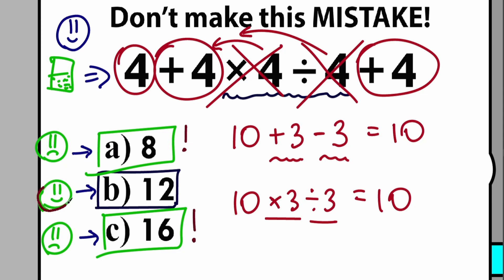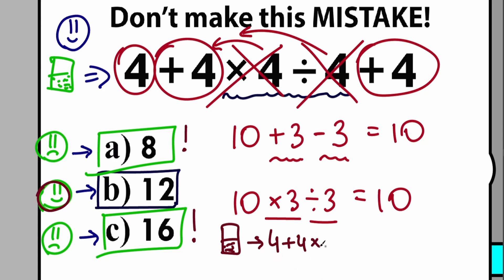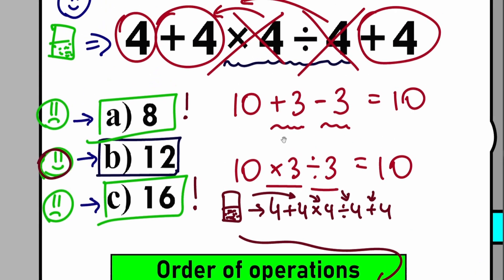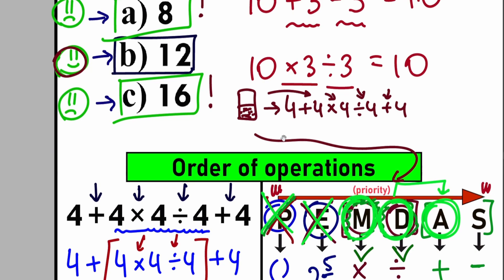You can be proud of yourself when you choose 12. When checking on your calculator, plug in the whole problem from left to right — don't stop partway and add 4+4 first. When you enter the full expression, your calculator is smart enough to apply order of operations: it sees addition, multiplication, division, another addition, no parentheses, and solves correctly. 99% of calculators work according to PEMDAS.